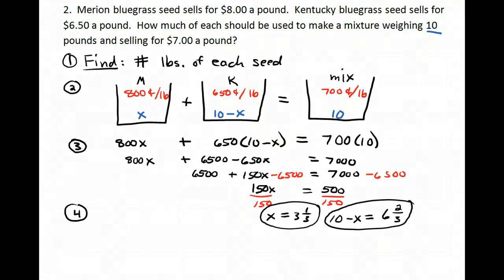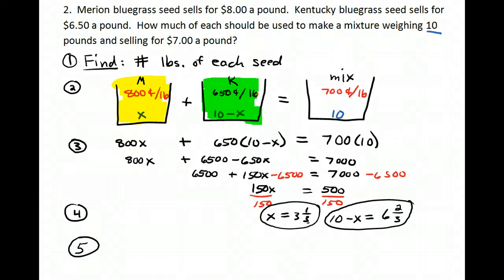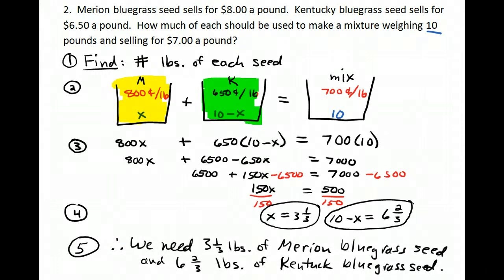Solving the equation gives x = 3⅓, which is the amount of Marion bluegrass seed. To find the Kentucky bluegrass seed, I take 10 minus x, which equals 6⅔. Therefore, we need 3⅓ pounds of Marion bluegrass seed and 6⅔ pounds of Kentucky bluegrass seed.